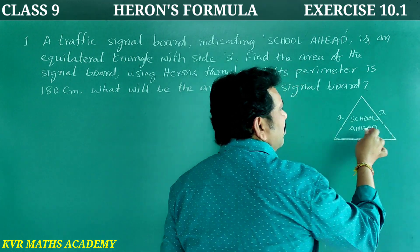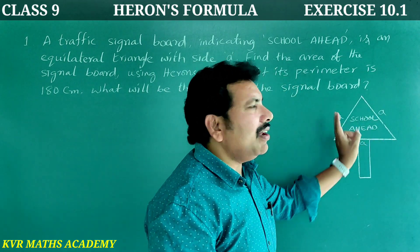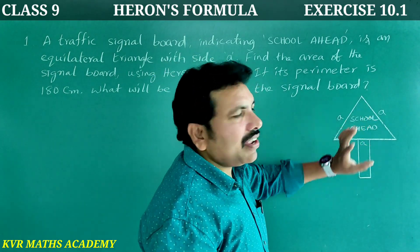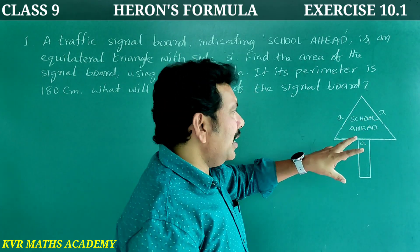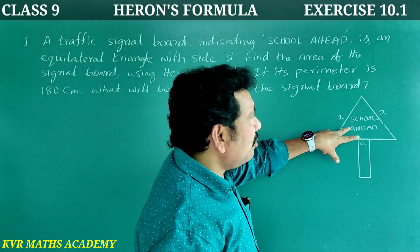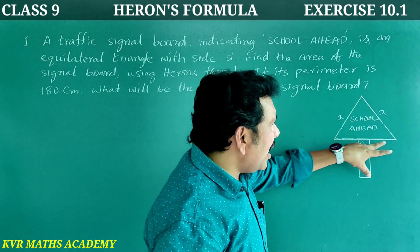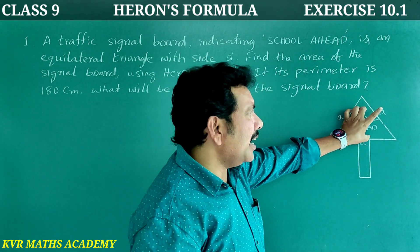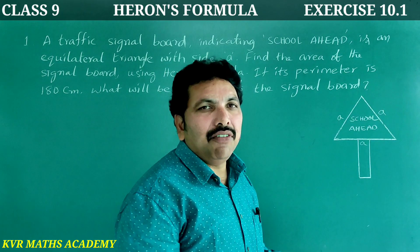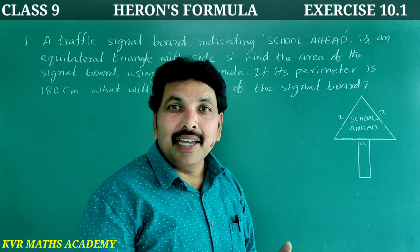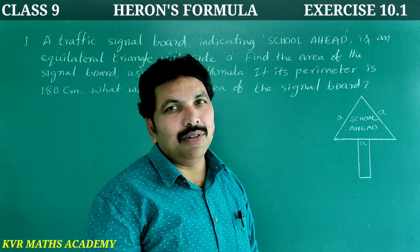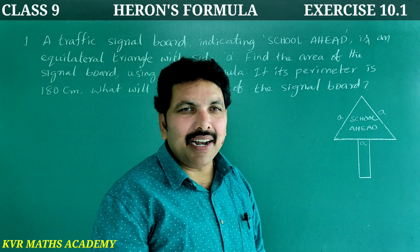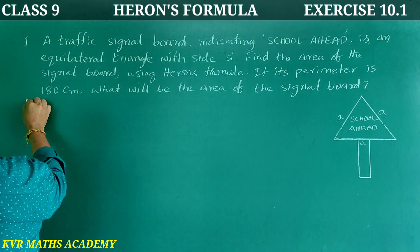It is in the shape of an equilateral triangle, so we have to find the area of this triangle. To find the area of an equilateral triangle, we will use Heron's formula.